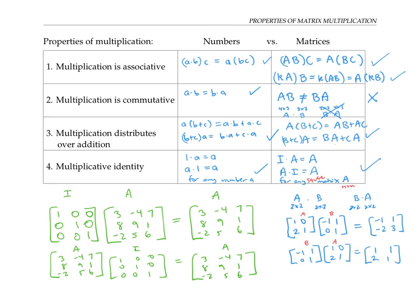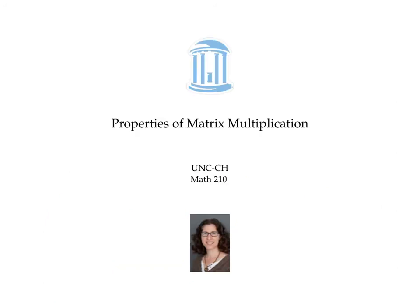More generally, the identity matrix for any n by n square matrix consists of n ones down the diagonal with zeros everywhere else. In this video, we noticed that matrix multiplication is associative, it is not commutative, it is distributive, and there's a multiplicative identity I.